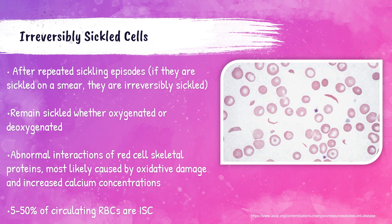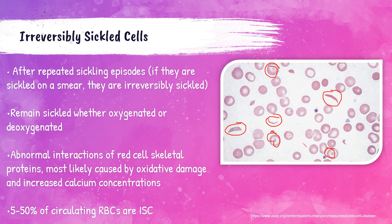Once the red cell is irreversibly sickled, they are stuck that way regardless of whether the blood is oxygenated or not. A peripheral blood smear of a patient with sickle cells shows sickle cells and target cells. If sickle cells are seen on the peripheral blood smear, they are irreversibly sickled. In a patient with sickle cell disease, 5 to 50% of all circulating red blood cells are irreversibly sickled.